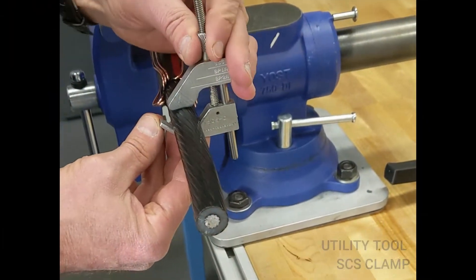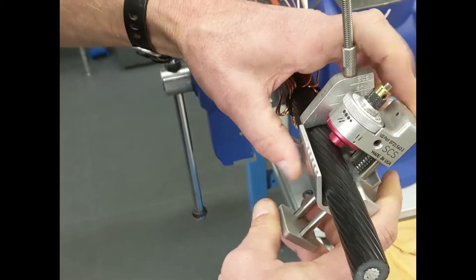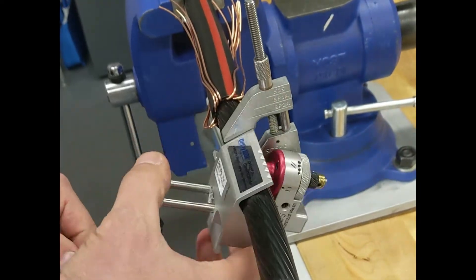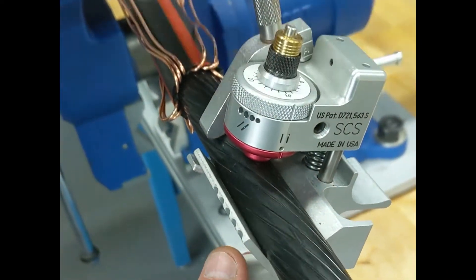Next we're going to demonstrate the SCS in a longitudinal cut position. For this we're going to use the SCS clamp to help establish the ring cut position to make easy work when you're trying to do multiple longitudinal cuts. First set the tool in the ring cut position and do your first ring cut.